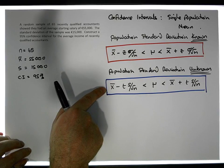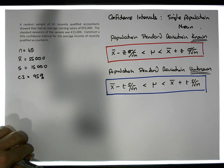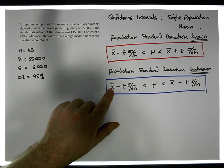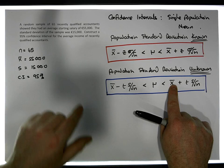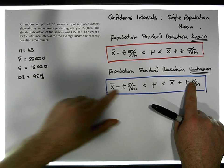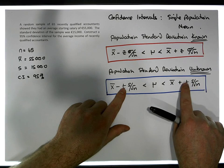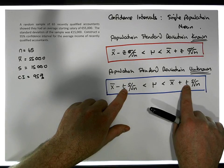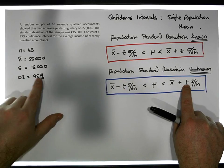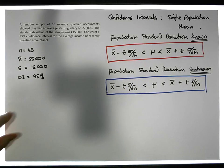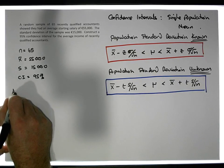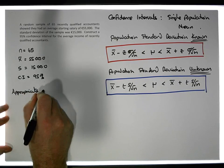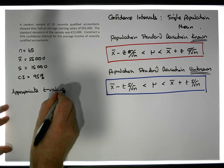The key thing here is that we don't know the population standard deviation — we only know the sample standard deviation. As such, we cannot rely upon the z-formula; we're going to use the one based on the Student's t-distribution. We know x̄, s, and n — the only thing missing is the t-value, so we have to calculate the appropriate t-value that goes along with a 95% confidence interval.